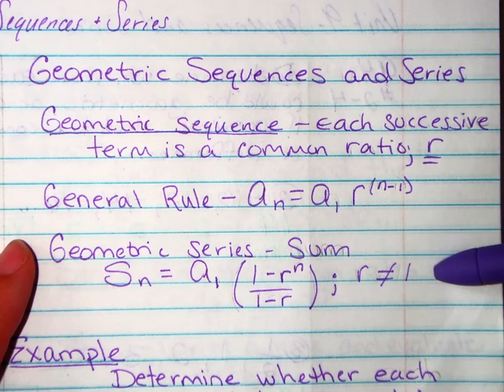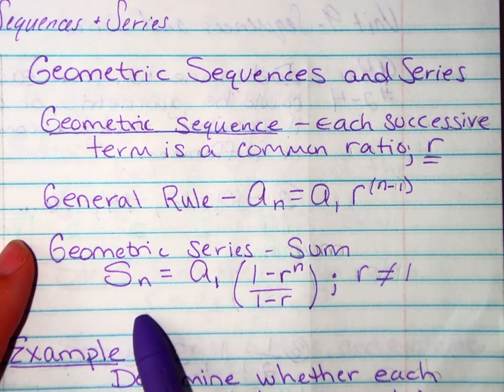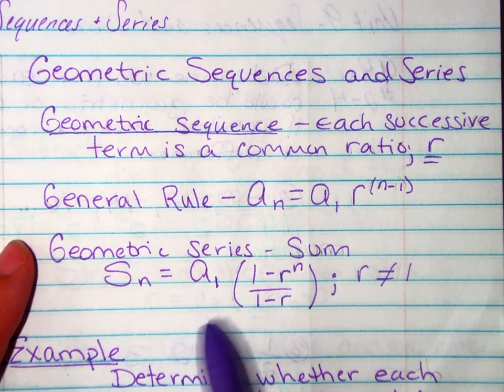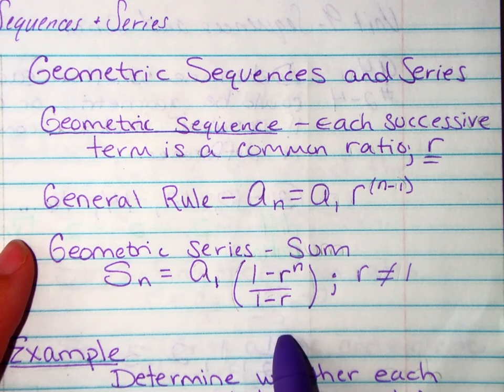And the sum for geometric series is s sub n equals a sub 1 times 1 minus r raised to the n over 1 minus r and r can never be 1 because 1 minus 1 would make my denominator 0.